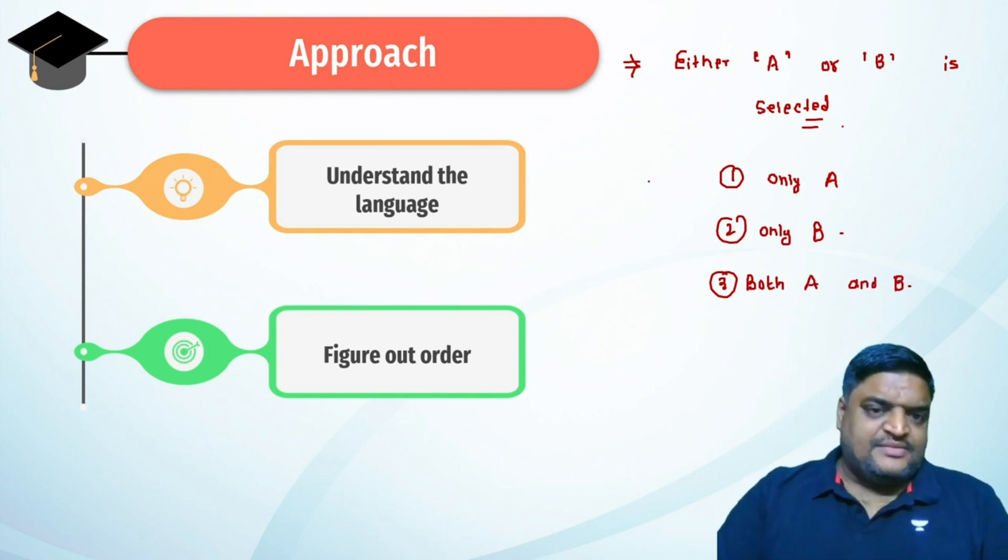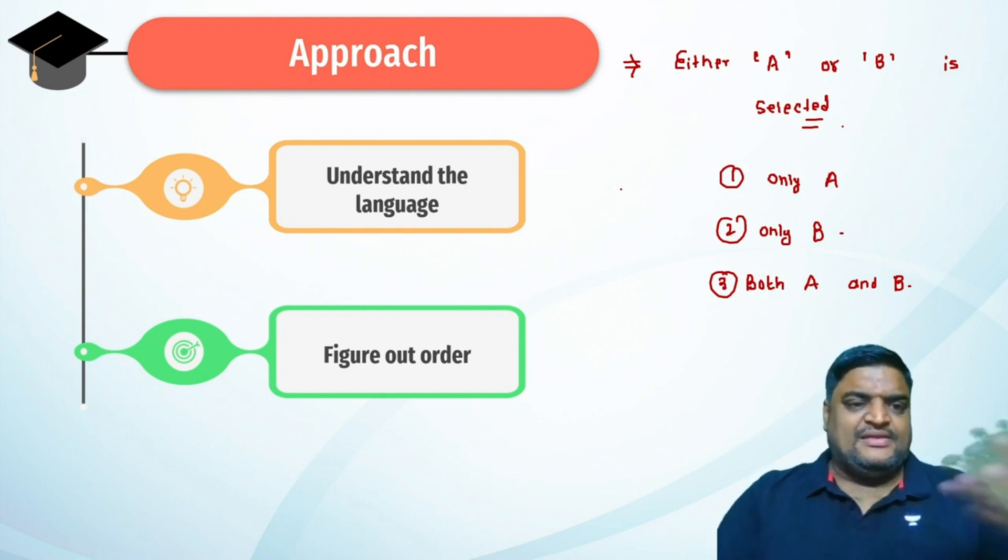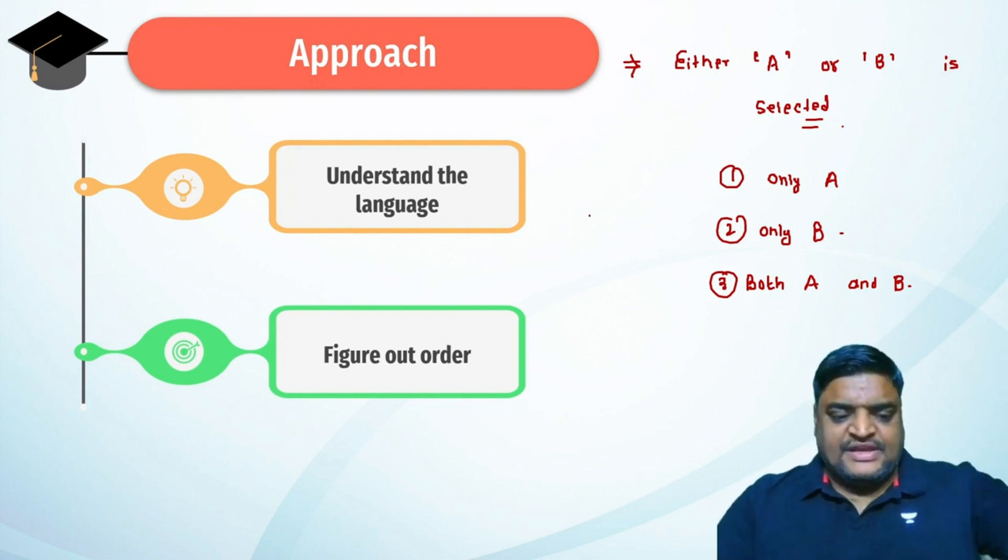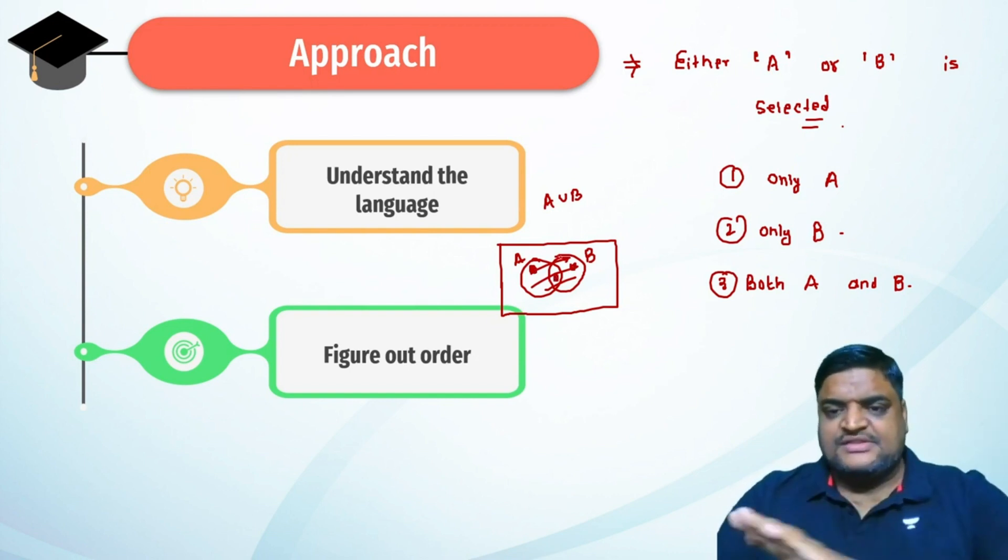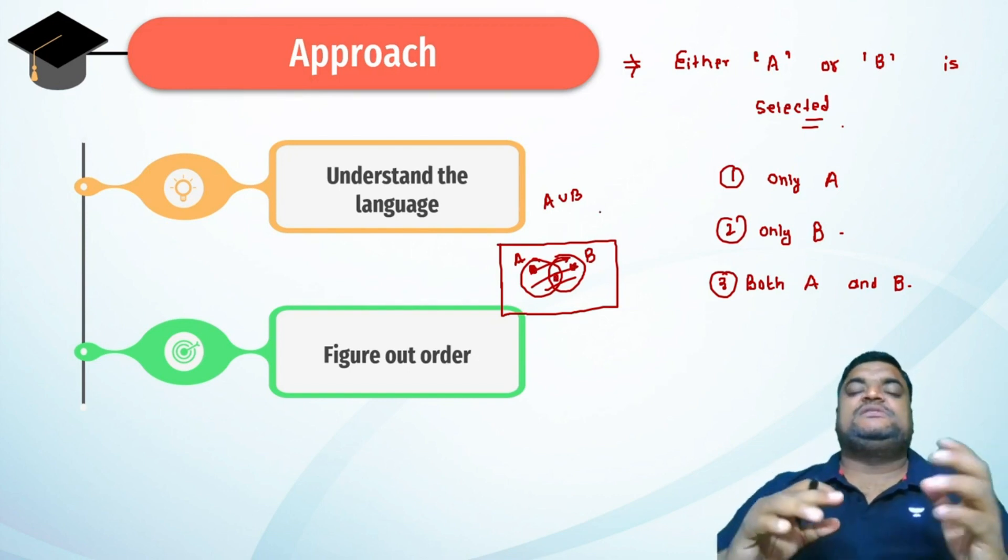You can confirm this by some knowledge of set theory. This 'or' was related to union - let this be A, let this be B. A union B was this entire region. Only A region was selected, only B region was selected, and both A and B is also part of A union B.